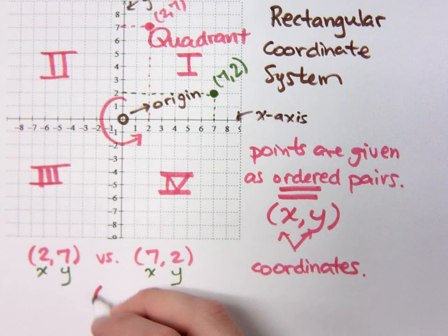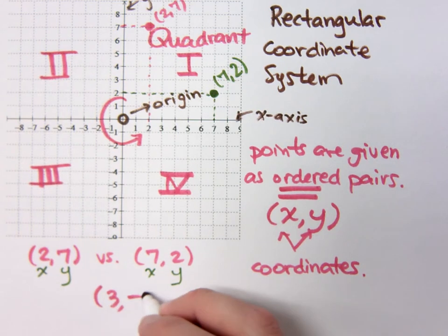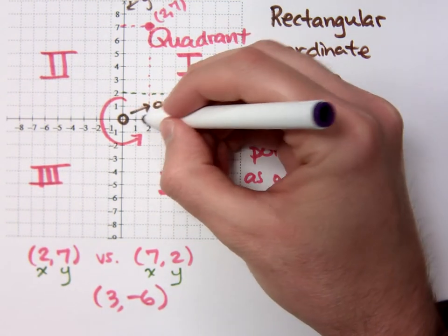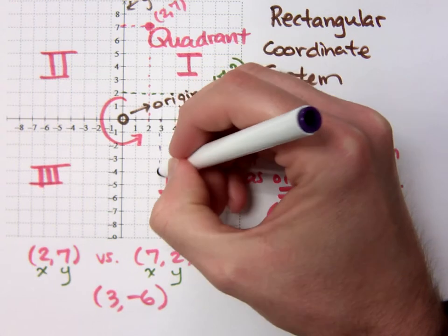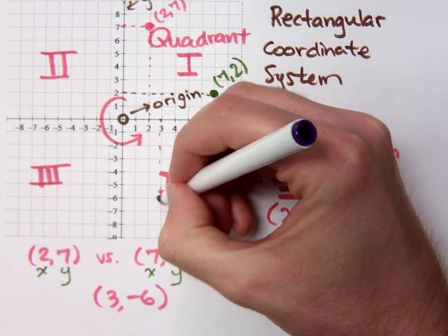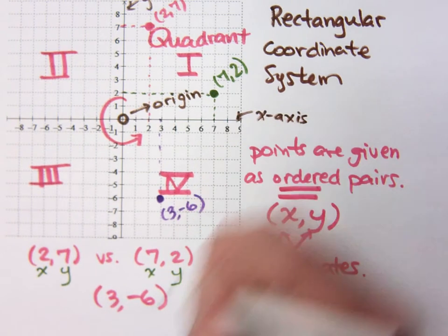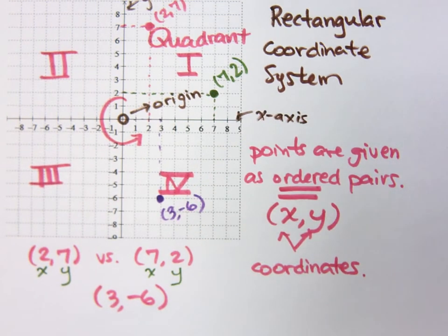Okay, what if I were to do this? Ask you to graph 3, negative 6. 3, negative 6. The X coordinate is 3 and you're down 6, so you'd be right here. This would be the ordered pair 3, negative 6. Yeah, I'll agree with that.